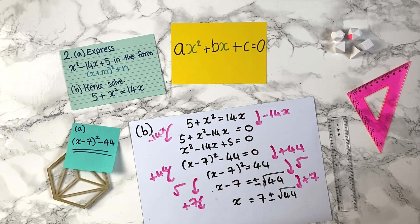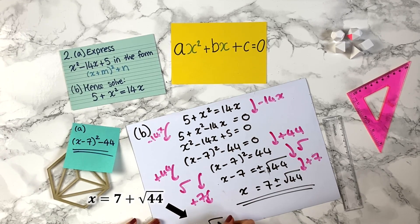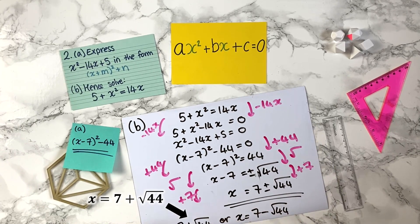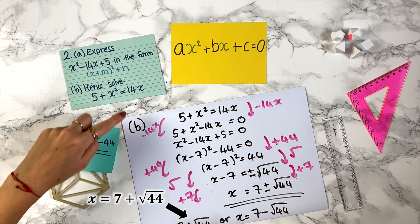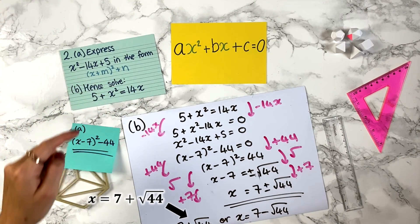Remember, every time you do something to one side, you do it to the other. This is our answer — and as before, this stands for two different answers. So we can write it with plus or minus, or say we have two solutions: x equals 7 plus square root of 44, or x equals 7 minus the square root of 44. You give both of these answers together. Again, you can put these in the calculator for decimal places, and you can check your solutions by substituting back into 5 plus x squared equals 14x to verify you get the same value on both sides.